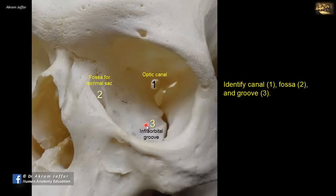The groove then disappears and becomes a canal — the infraorbital canal — that opens in front of the maxilla, just beneath the inferior margin of the orbit, as the infraorbital foramen, which transmits the infraorbital nerve.